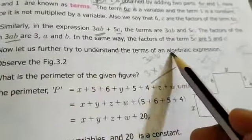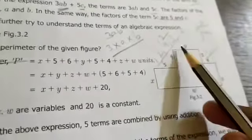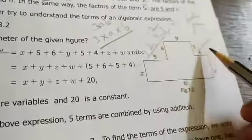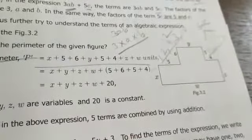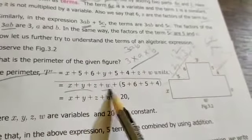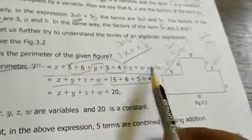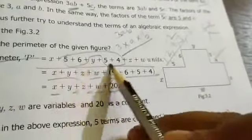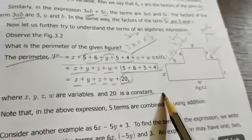Now let us further try to understand the terms of algebraic expressions. Let's take this diagram. If you add all sides, you can find the perimeter. Here the sides are y, 5, 6, x, w, z, and 4. If you add all sides you get x plus y plus z plus w plus 20 units, where x, y, z, w are variables and 20 is a constant.